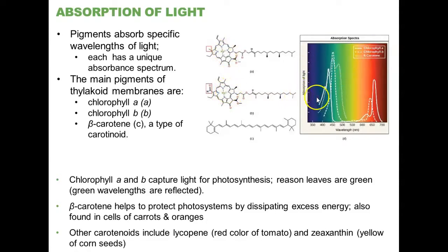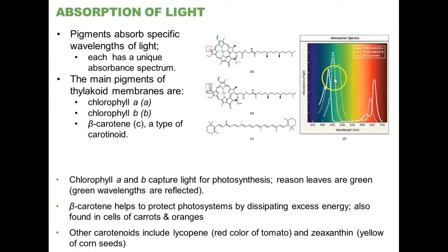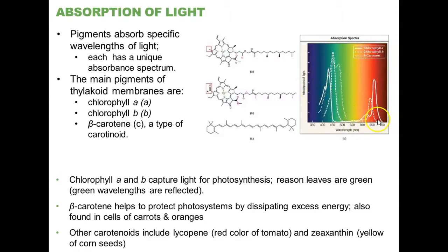Chlorophyll A absorbs a little higher up in the blue range and quite a lot of red light as well. Chlorophyll B does a much better job of absorbing blue and short green wavelengths but not nearly as much red light. Beta-carotene — the yellow dotted line — appears completely red because it absorbs blue and green light but does not absorb any red light. Those are the three most common photo pigments in plants, though there are quite a few others responsible for other colors.